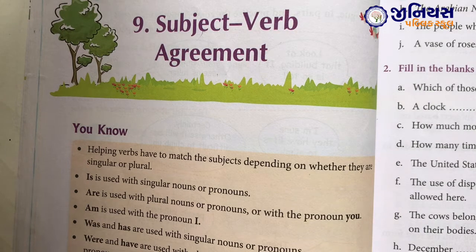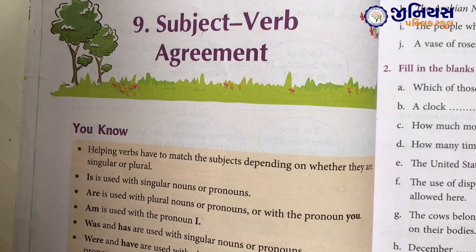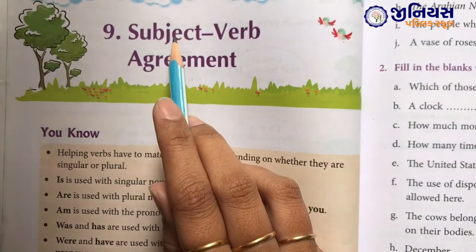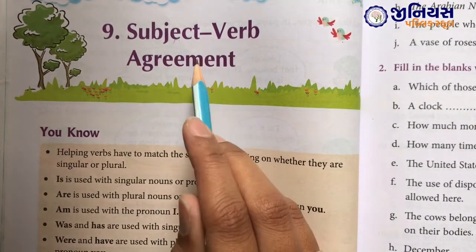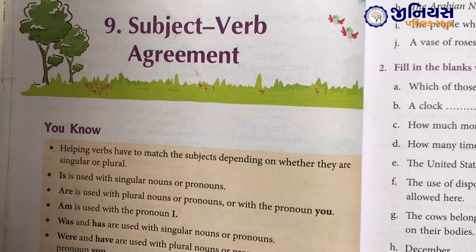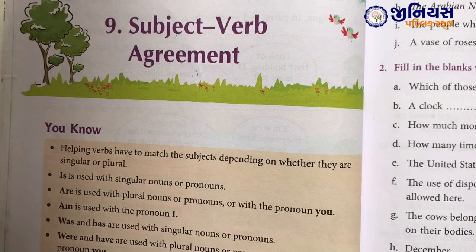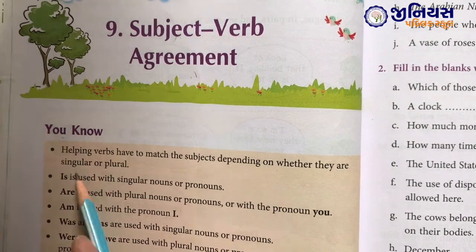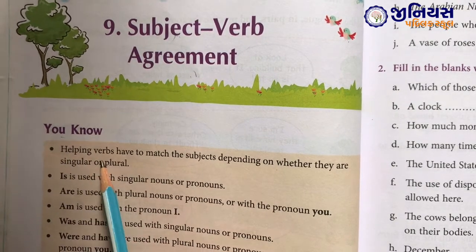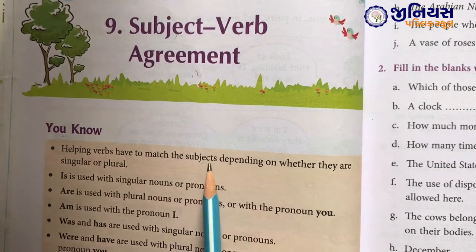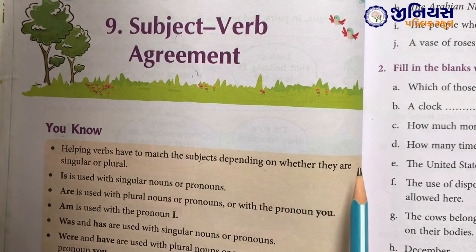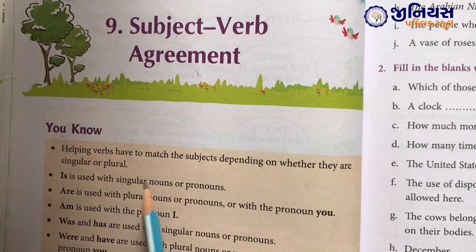Verbs also include: am, is, are, was, were, has, have, had. These are all also called verbs. Helping verbs have to match the subject depending on whether they are singular or plural.